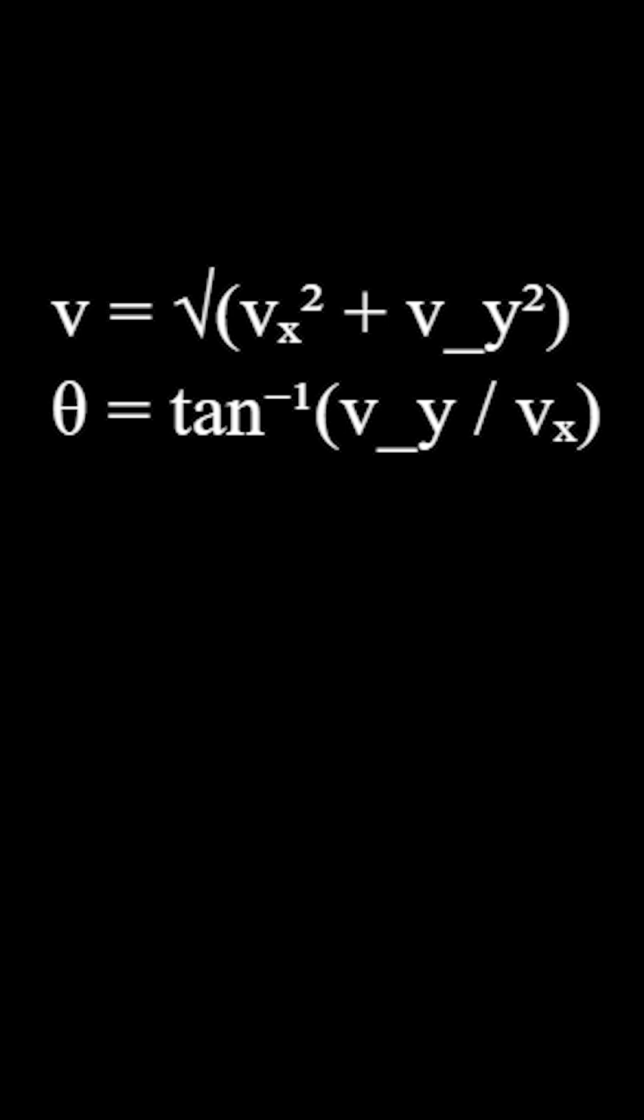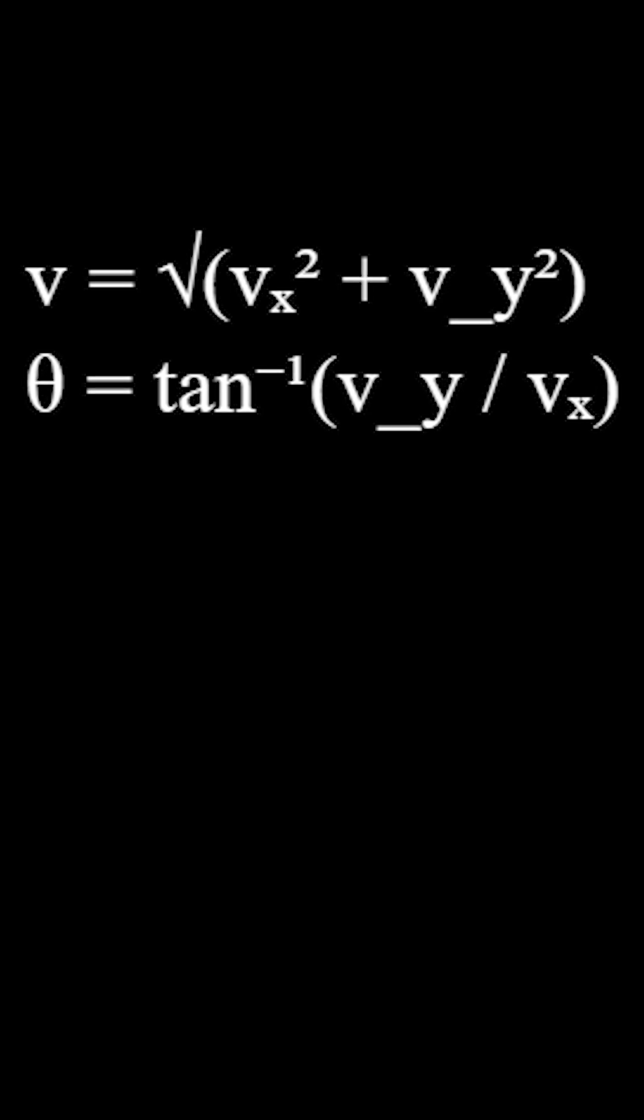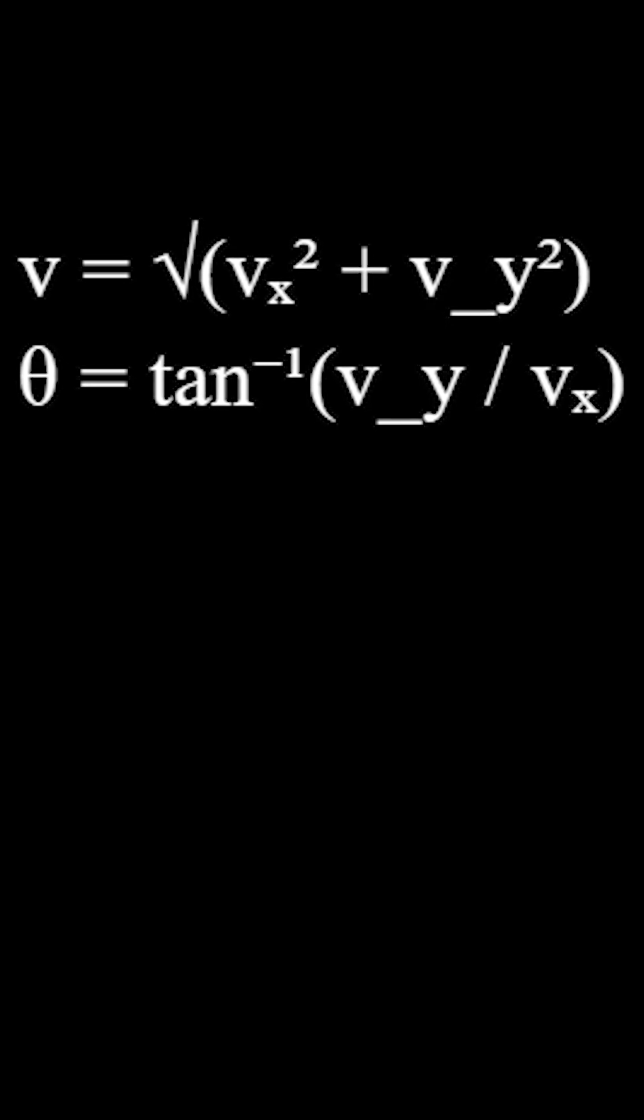v equals the square root of vx squared plus vy squared. Theta equals the inverse tangent of vy over vx. That's how you reconstruct the total direction and speed.